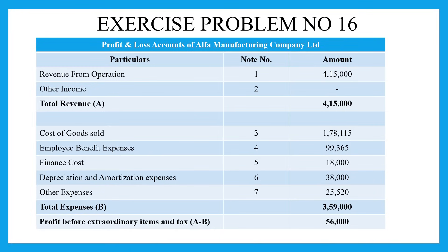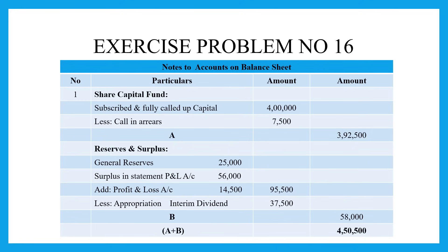The total revenue is 4,15,000 rupees. Working note 3 — cost of goods sold — is 1,78,115 rupees. Employee benefit expenses (working note 4) is 99,365 rupees. Finance cost is 18,000 rupees. Depreciation and amortization expenses are 38,000 rupees. Other expenses are 25,520 rupees, giving total expenses of 3,59,000 rupees. So profit before extraordinary items and taxes is 4,15,000 minus 3,59,000, which equals a profit of 56,000 rupees.